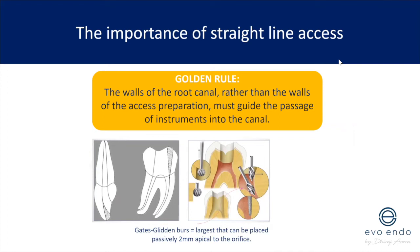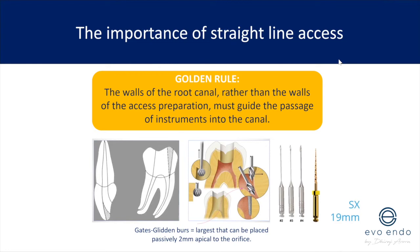I'm often asked: for Gates Glidden burs, which is the largest size I can use? It's the largest that can be placed passively two millimeters apical to the orifice — a passive insertion, not forcing it in. Avoid using large Gates Glidden sizes four, five, and six, particularly in MB canals of upper and lower molars, because there is commonly a concavity on the distal aspect of the mesial root and you can cause a strip perforation. Use a smaller size, the SX bur, or more flexible heat-treated NiTi or controlled memory wire instruments.